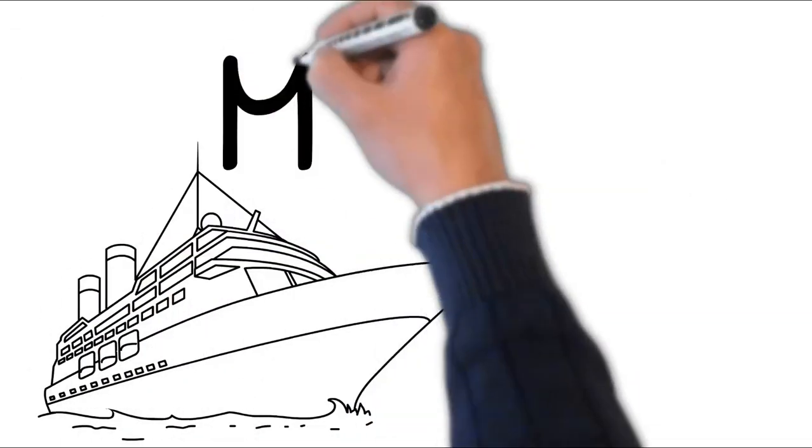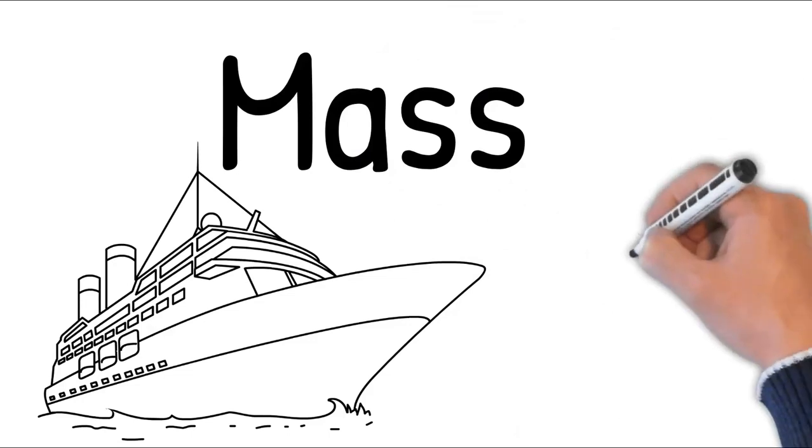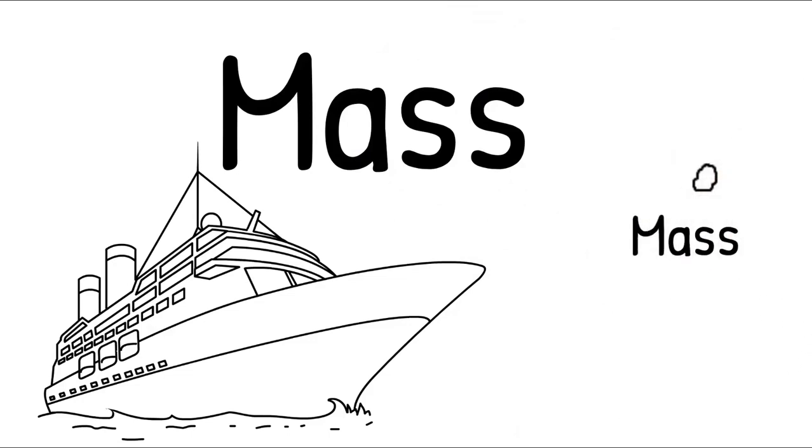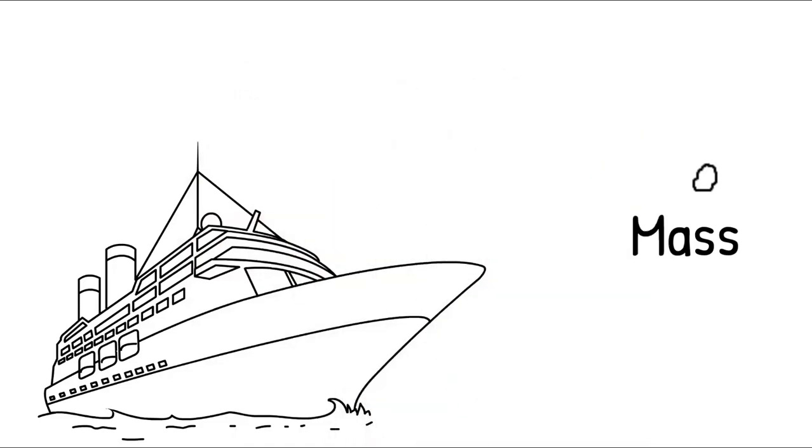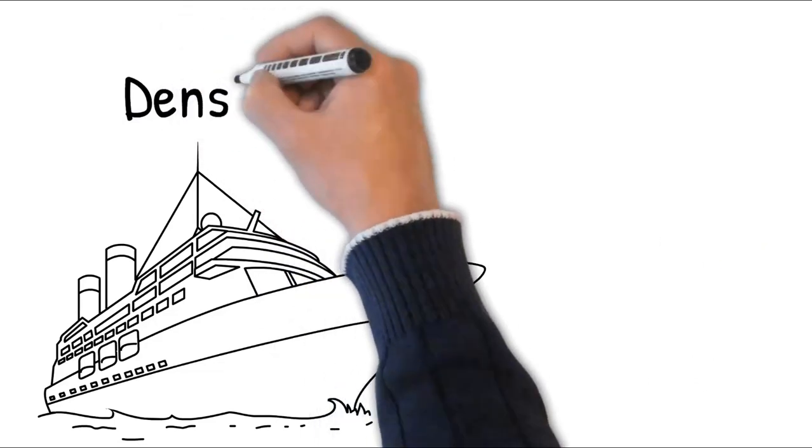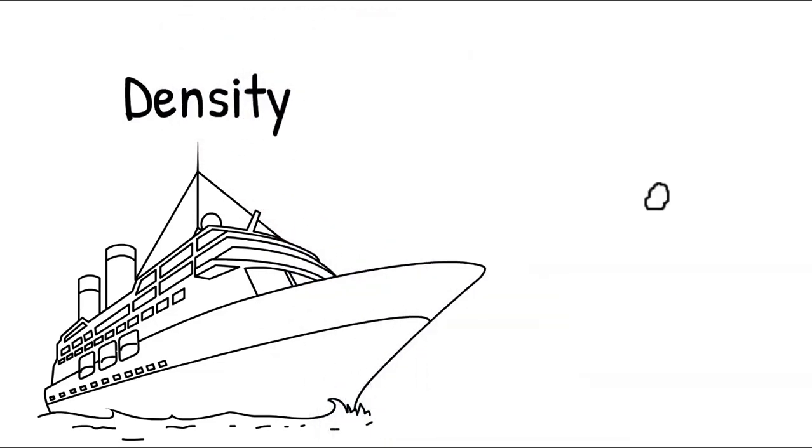A ship has a large mass. A stone has a small mass. But mass is not what determines whether something floats or sinks. Rather, it's density. A ship has a lower density than water, so it floats.